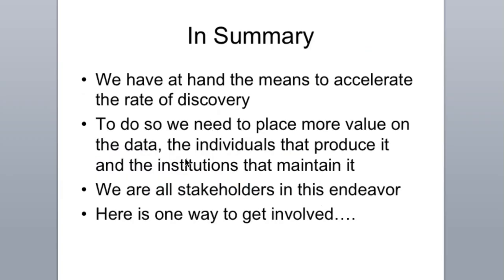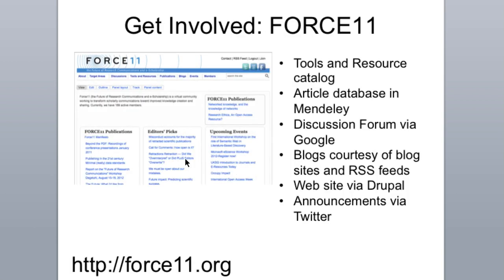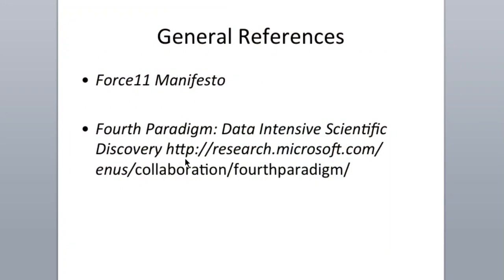So in summary, we have at hand, I think, the way to increase the rate of discovery. We need to put more value on the data and the individuals that produce it and the institutions that maintain it. We're all stakeholders in this endeavour. I'm going to give you one example of how you can get involved: there is an organisation called Force 11, which has come out of a common group of people who feel they can really make a difference in scholarship by getting together and working in this notion of a commons, to improve the way scholarship is maintained and disseminated. I encourage you to sign up to the mailing list and get involved. There's also a manifesto from Force 11, and the fourth paradigm which focuses on the importance of data — both obviously open access.